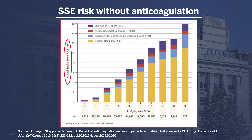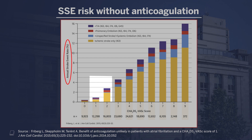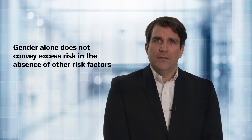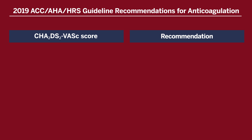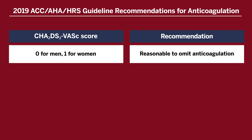There is a slight inflection point between a CHADS-VASc score of one and two. The authors compared female patients with a score of one — which would just be for gender — versus men with one additional risk factor. Women had a lower stroke risk of about 0.1 to 0.2 percent versus men at 0.7 to 1.3 percent. Guideline recommendations have taken that into account and suggest that gender alone does not convey excess risk in the absence of other risk factors, so revised AFib guidelines say to consider non-gender risk factors when deciding about anticoagulation.